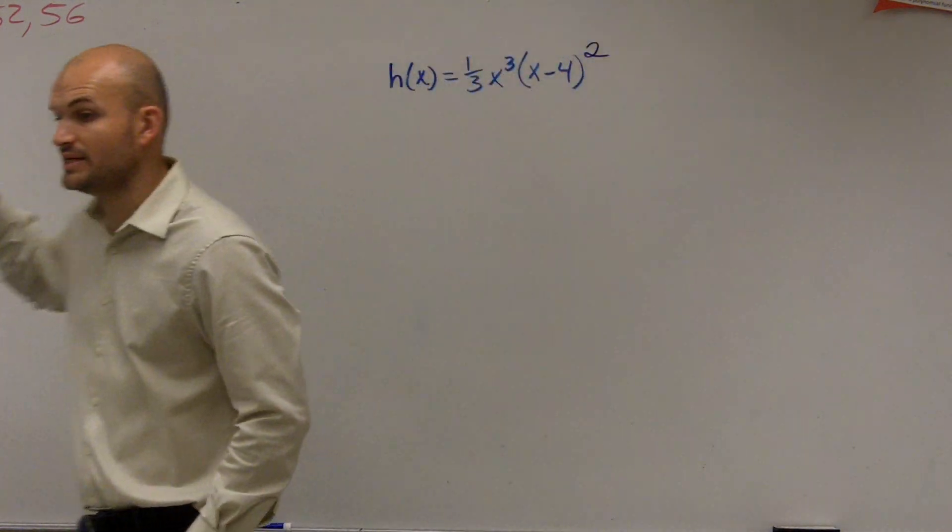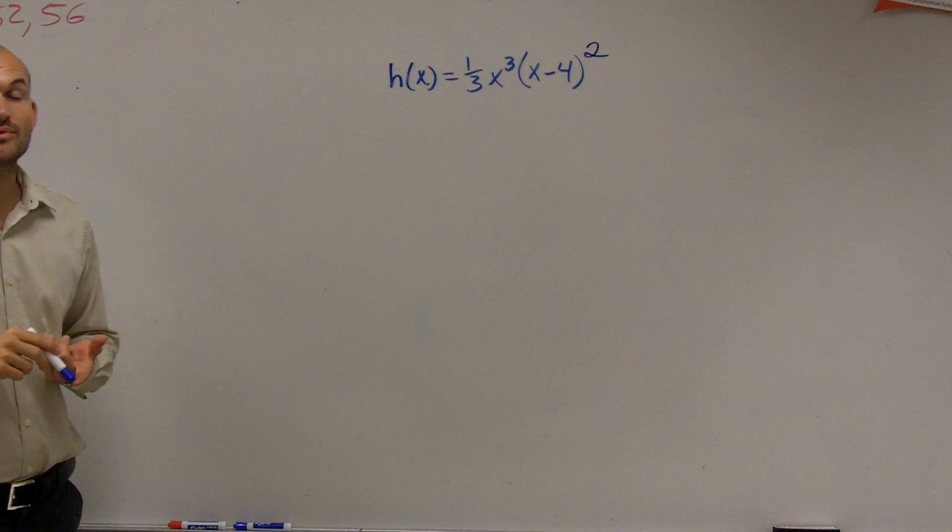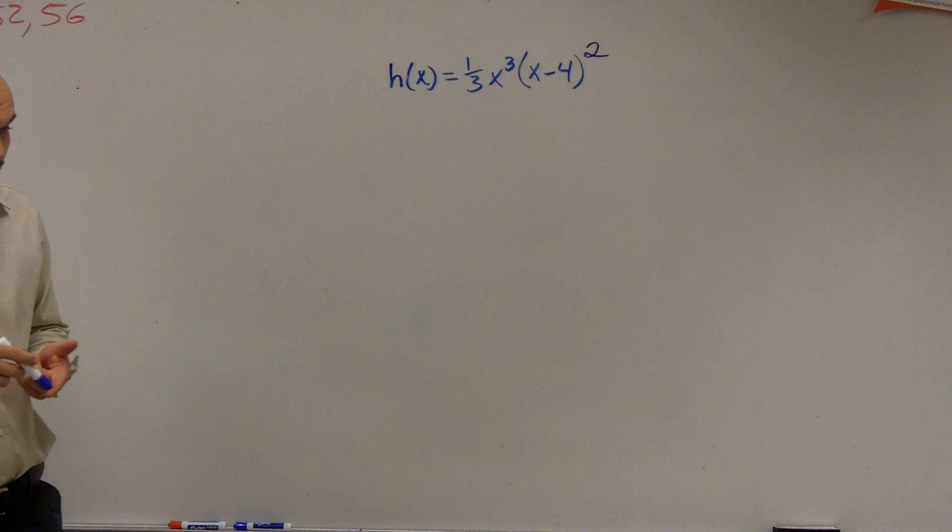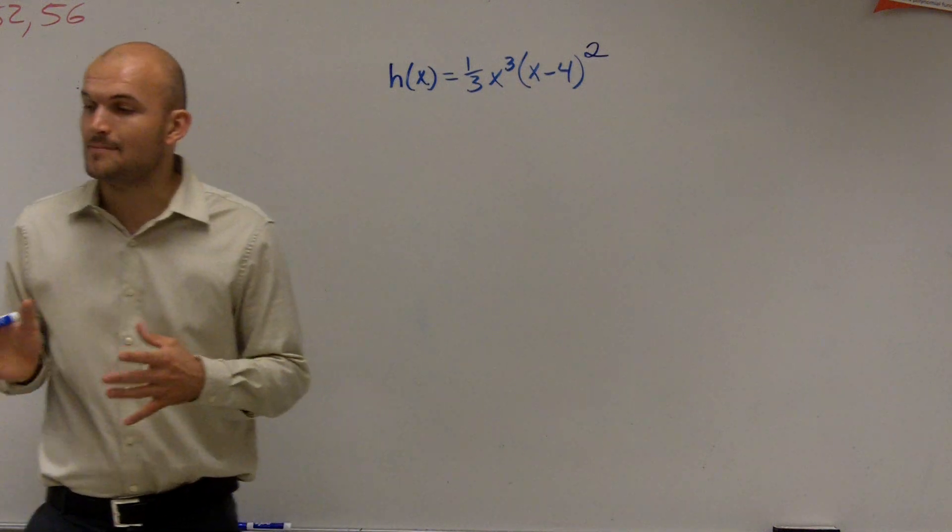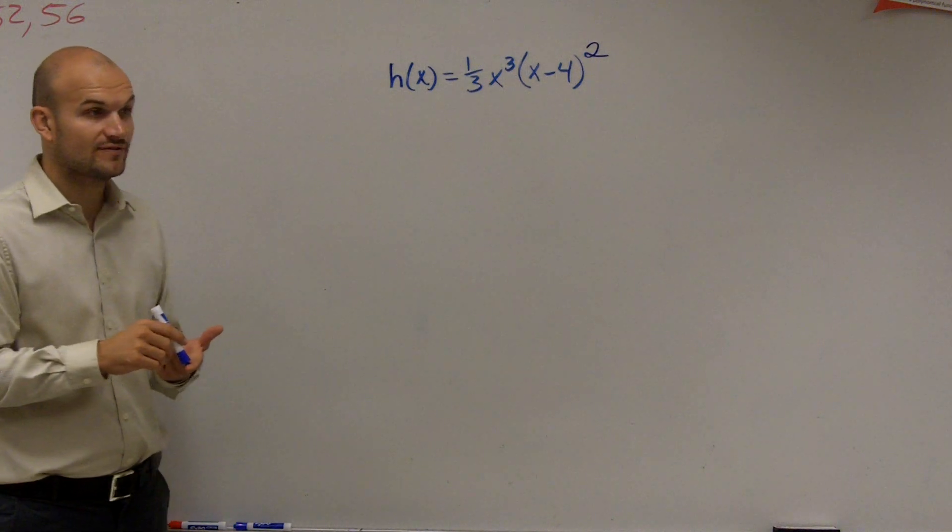So what we need to do for this problem is we need to find the zeros, the multiplicity, and the end behavior. So the first thing I want to do when finding the end behavior is I need to find the degree, and also I need to find the leading coefficient.